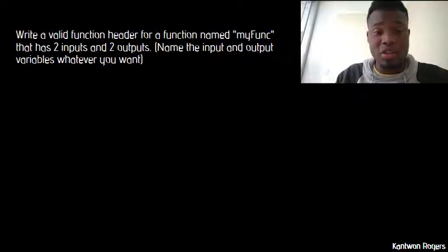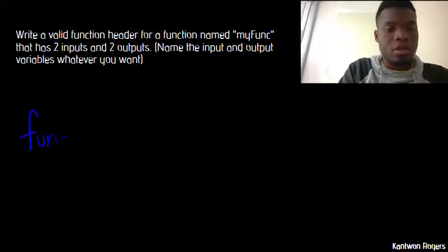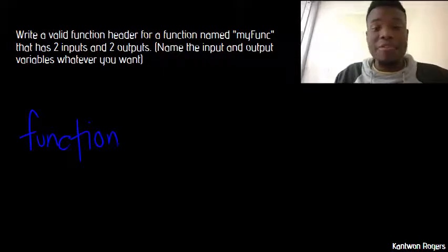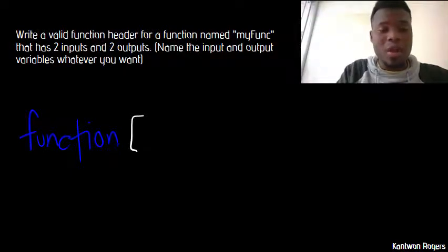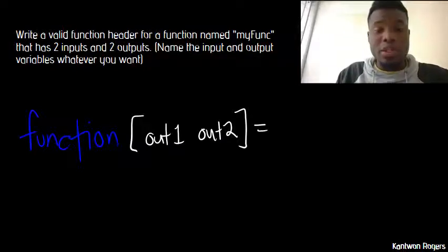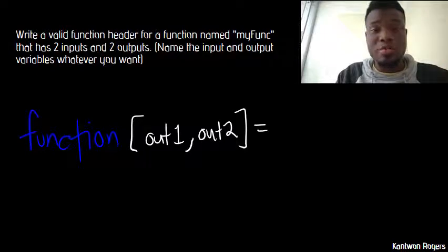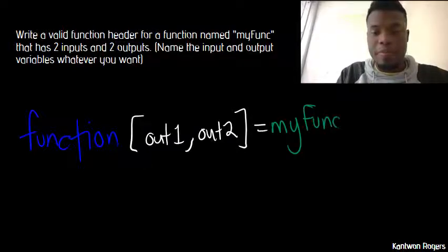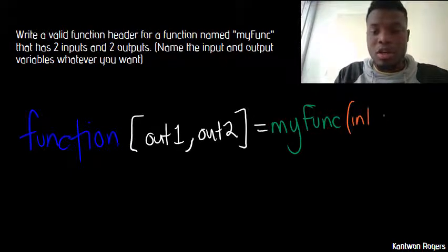The problem says to write a valid function header for a function named my_func that has two inputs and two outputs. Every function header starts with the word 'function' in all lowercase. Since we have multiple outputs, we encase them in square brackets: [out1, out2]. The comma is not necessary but good practice. After the assignment operator, we have the function name my_func, and then the inputs in parentheses: (n1, n2). The comma between multiple inputs is mandatory.